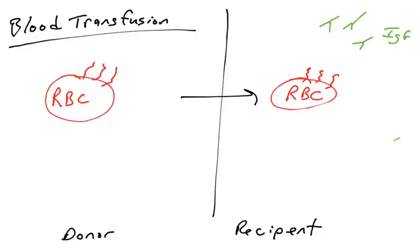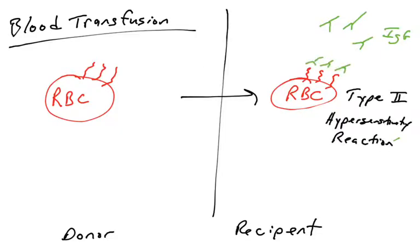If there are molecules on the surface of red blood cells that are identified by an antibody — where the antigen binding site binds them — this would trigger a Type 2 hypersensitivity reaction. If an individual made IgG antibodies binding to the surface of a red blood cell, that triggers complement activation via the classical pathway, starting with C1, eventually leading to complement fixation, anaphylatoxin production (C5a and C3a), inflammation, opsonization, and formation of the membrane attack complex on the red blood cells.